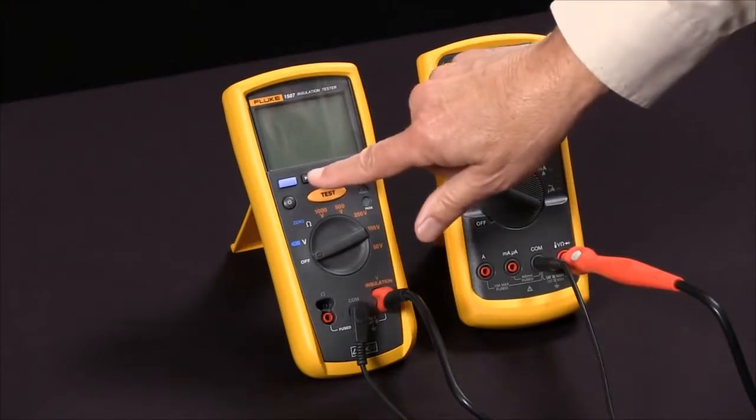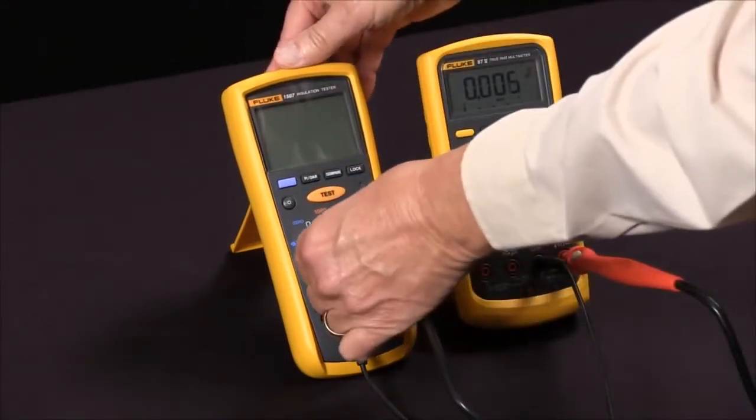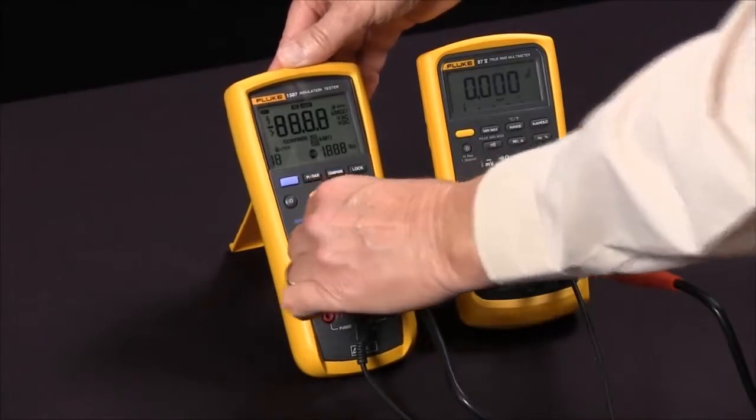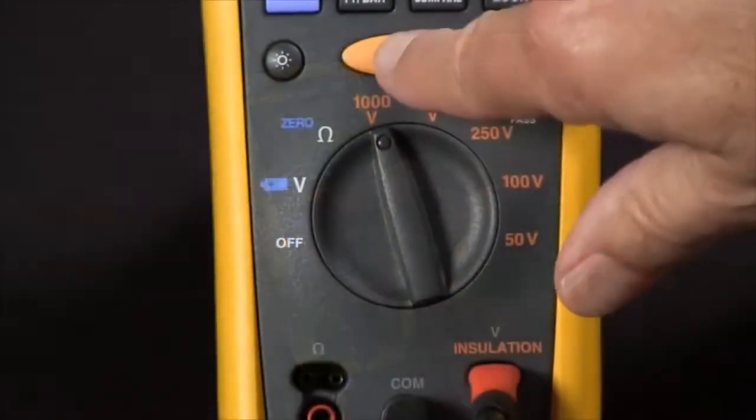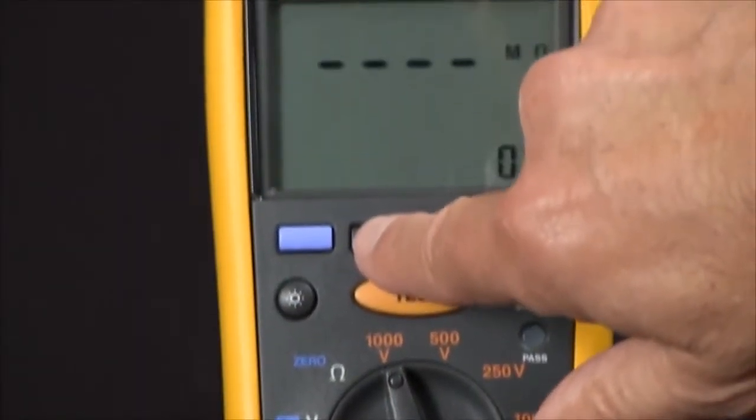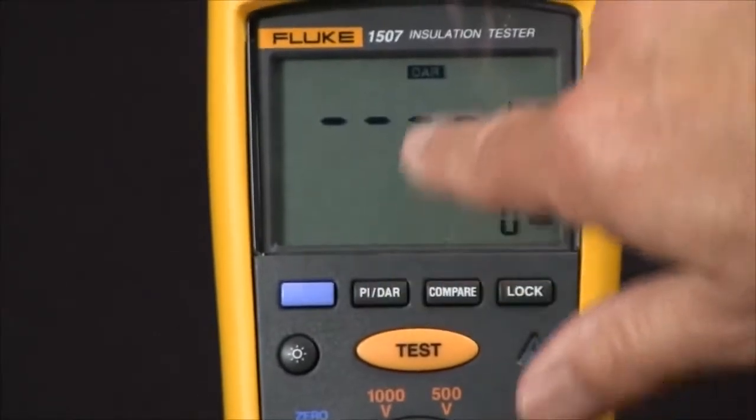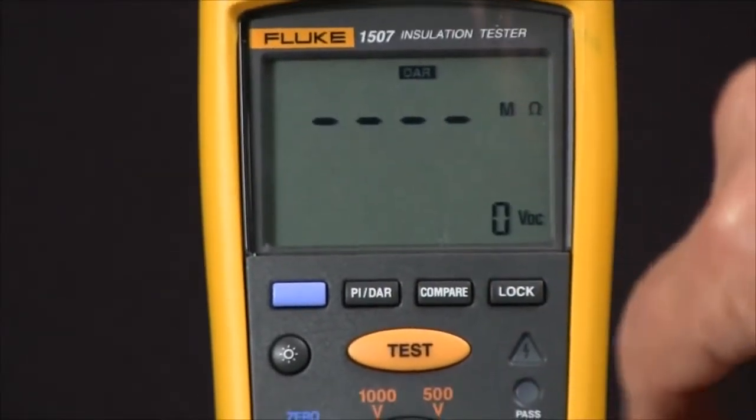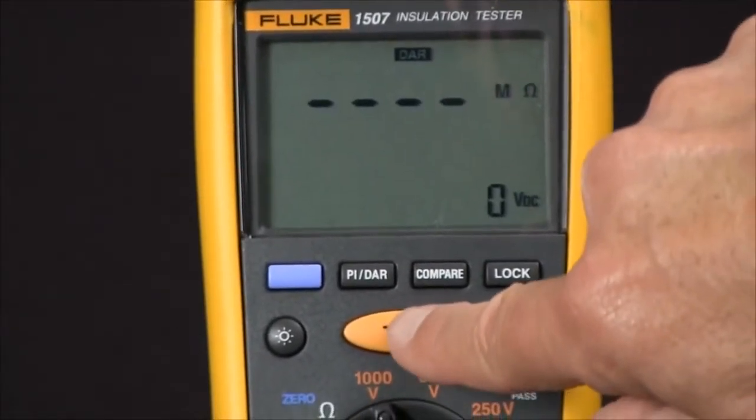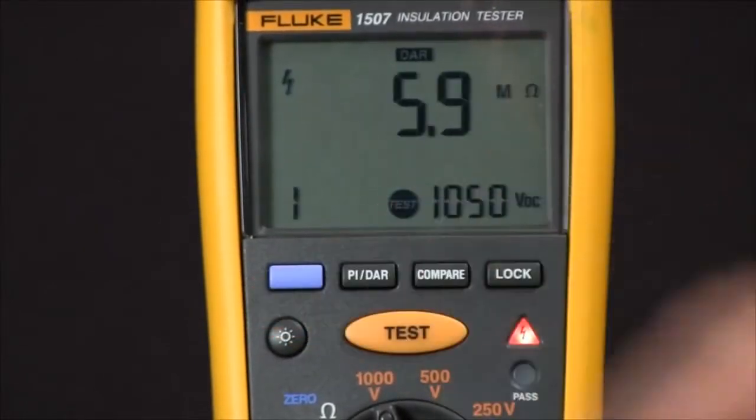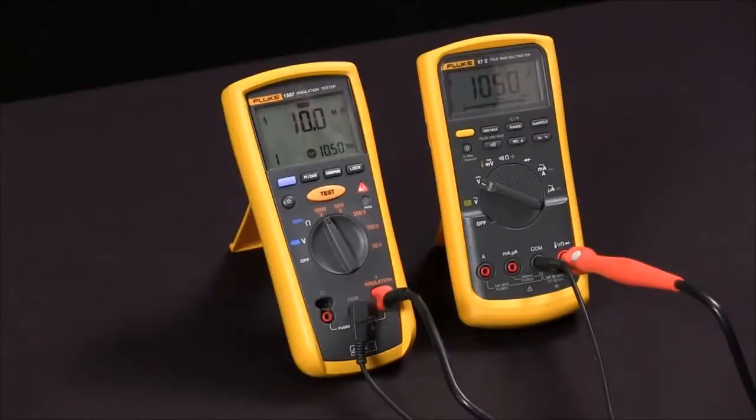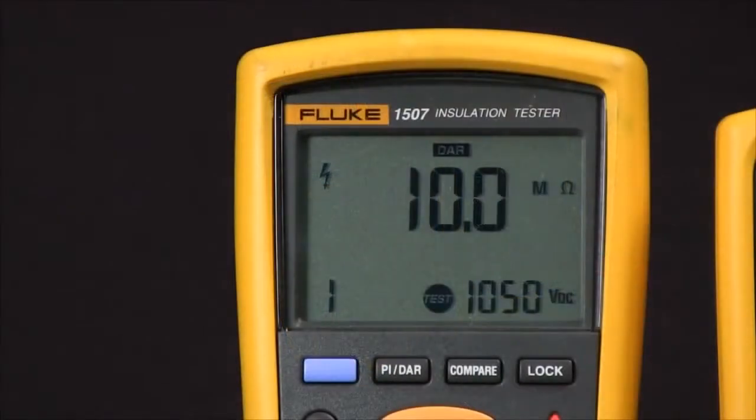We're going to pick 1,000 volts, so we rotate our selector knob to 1,000 volts and select our test. In this case, I'm going to do DAR, dielectric absorption ratio. I push the test button and it begins the test. You notice down the bottom left corner the 1 minute appears and it'll be counting down the 10 mega ohm insulation resistance and the applied voltage.